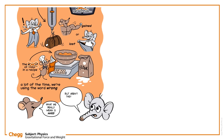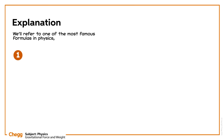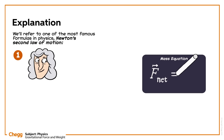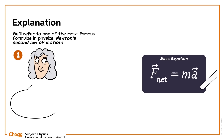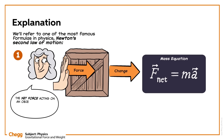But aren't they the same thing? To understand the difference, we'll refer to one of the most famous formulas in physics — Newton's second law of motion: F equals ma. The net force acting on an object of mass m is given by mass times acceleration.